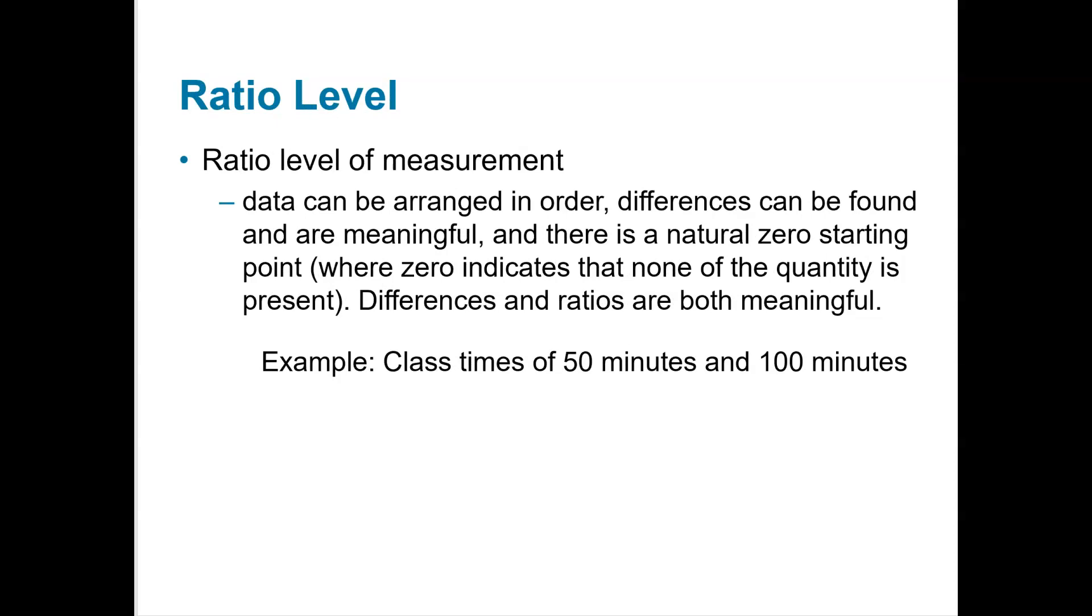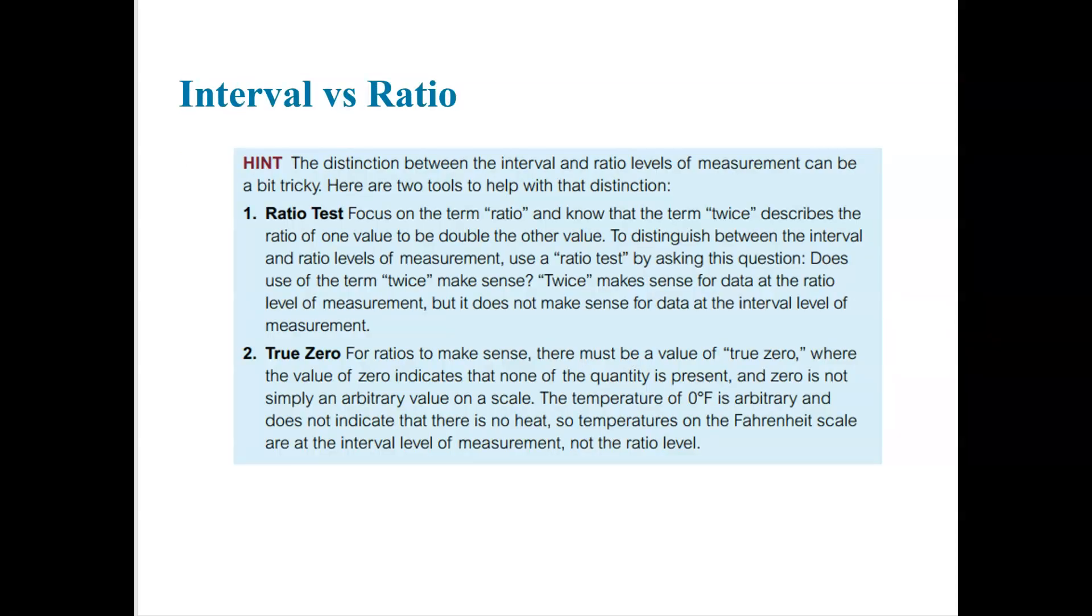Ratio is the highest level of measurement. It can be arranged in order. Differences can be found and are meaningful and where zero actually indicates none. So if we have class time of 50 minutes and 100 minutes, if we have zero minutes of class time, we have no class time. That makes sense. So that would be ratio. You can pause this to get a little hint from the textbook about ways to distinguish the two of these. One thing I like is about temperature. If it's zero degrees, we wouldn't say it has no heat or no temperature. So it wouldn't be ratio because the zero doesn't make sense.